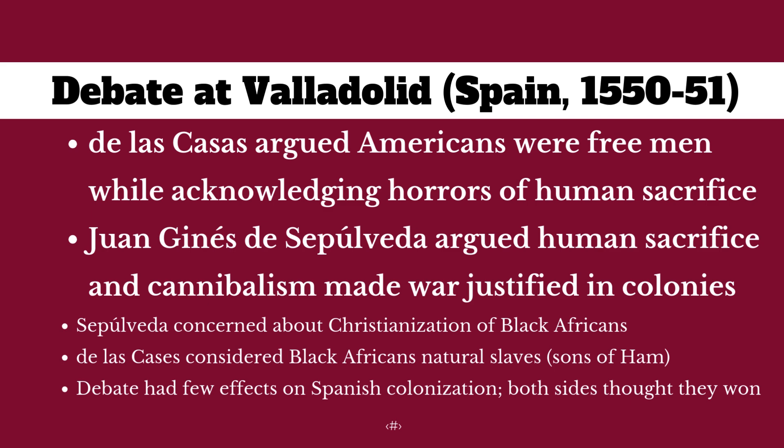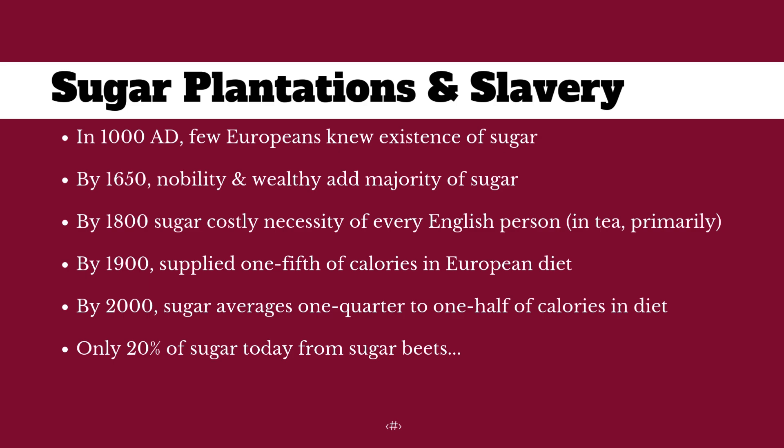This happens at the same time that sugar is growing as a commodity. In the year 1000, few Europeans knew sugar existed. By 1650, it was widespread in noble houses. By 1800, every man, woman, and child was eating sugar every day. By 1900, it was a fifth of the calories in the European diet. Nowadays it's somewhere between a quarter and a half — not because you're sprinkling sugar on everything, but because there's sugar in all the processed foods we eat.